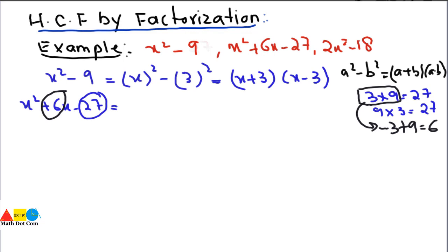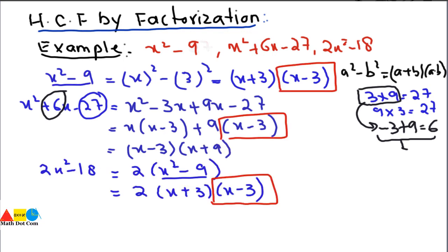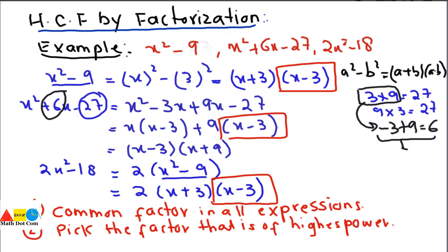We break 6x and replace it: x² − 3x + 9x − 27. Taking common: x(x − 3) + 9(x − 3). The common factor is (x − 3), so this factors as (x − 3)(x + 9). Checking all three expressions, the common factor is (x − 3). So the HCF of all three algebraic expressions is (x − 3).